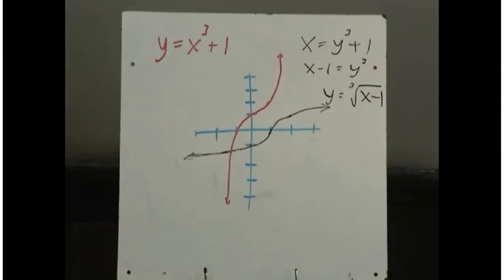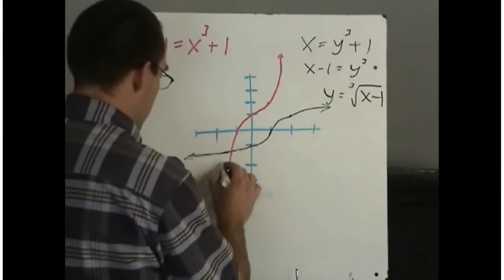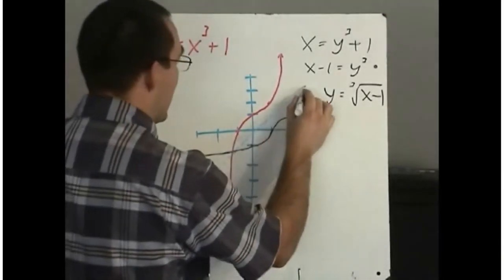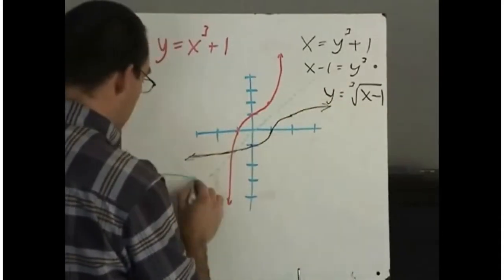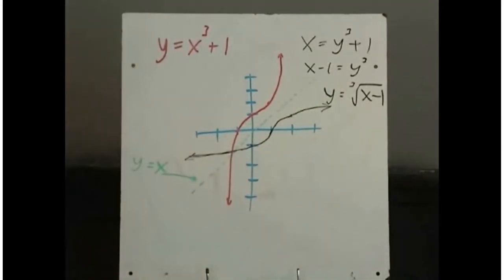Well it turns out that the reflection line is actually the diagonal line here. That's the line y equals x, the diagonal line.